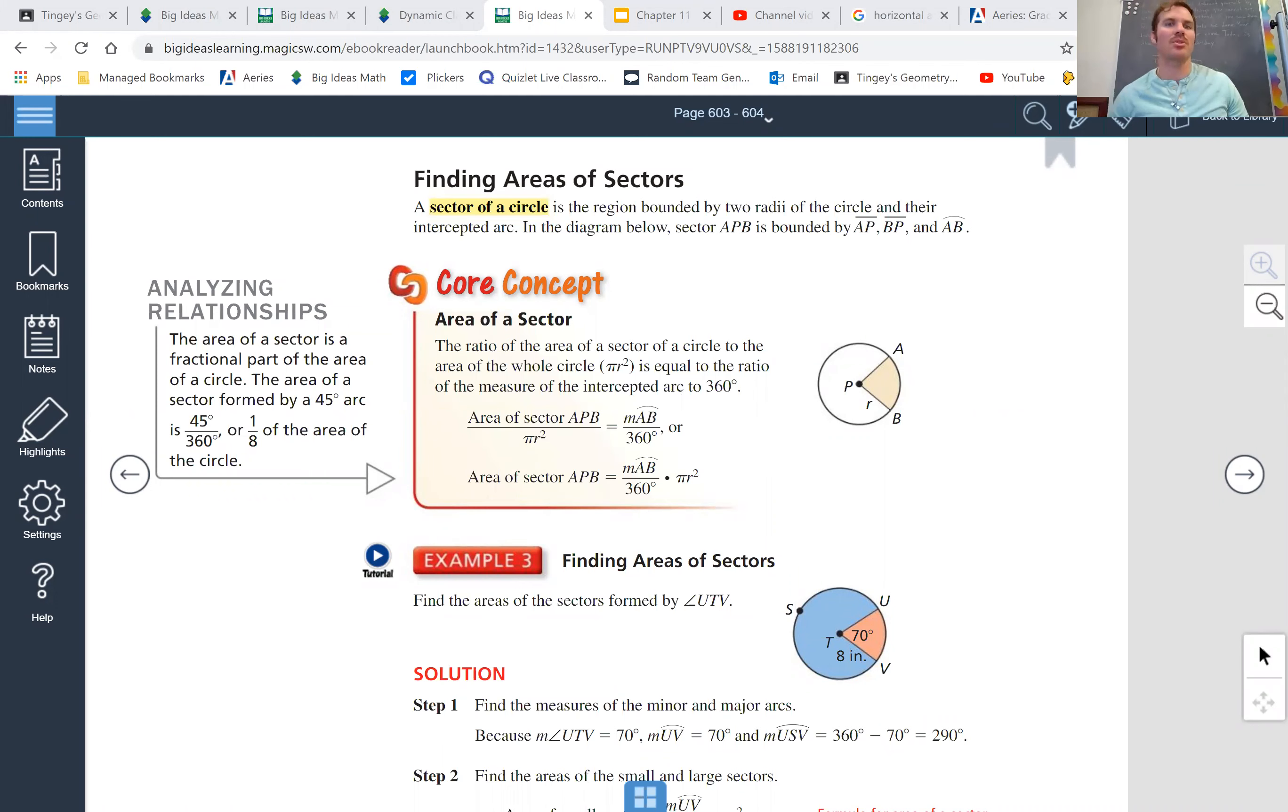Okay, so a farmer has a field with the shape shown. Find the area of the shaded region to the nearest square meter. Okay. This one isn't too bad. We probably need that area of sector core concept idea there.